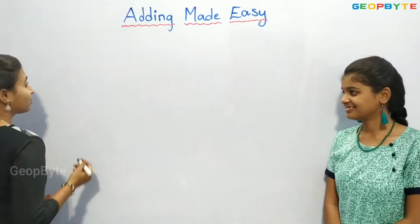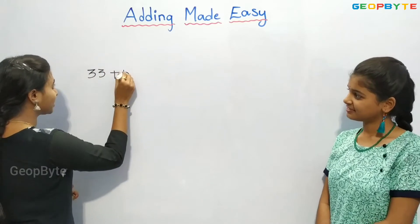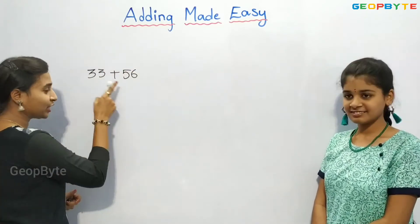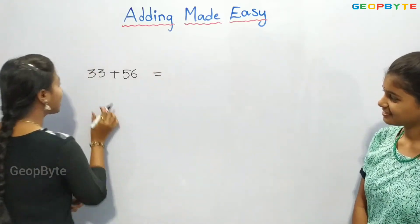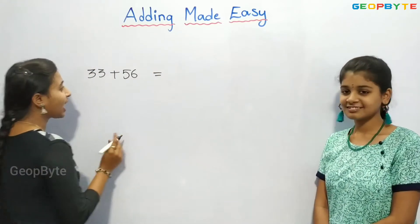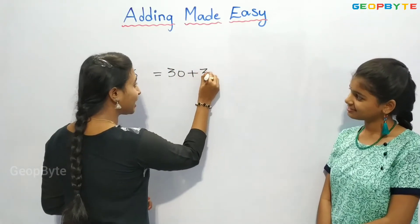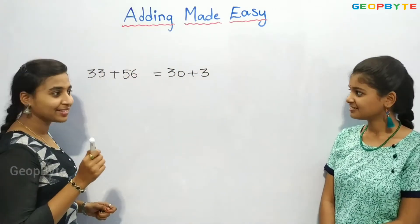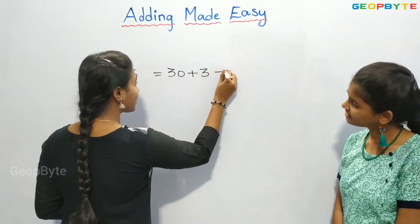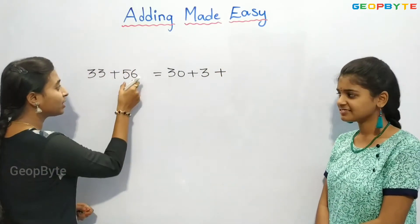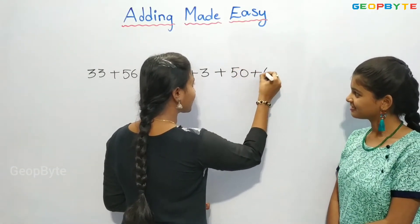If we add 33 plus 56. Now, we can divide 33 as 30 plus 3. And we can divide 56 into 50 plus 6.